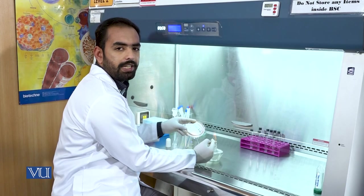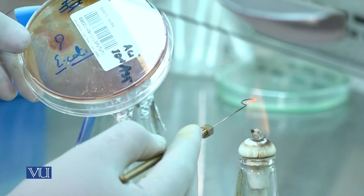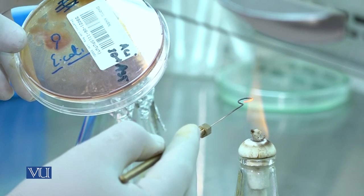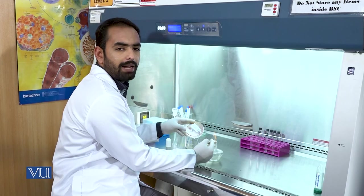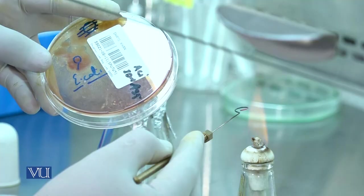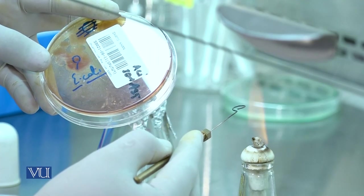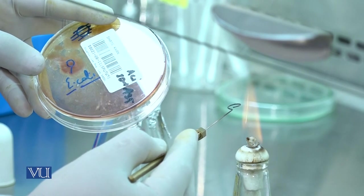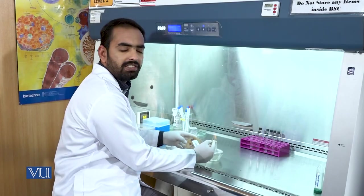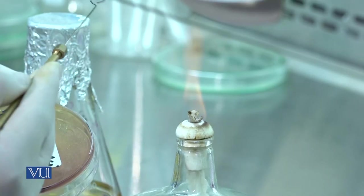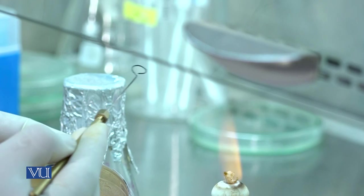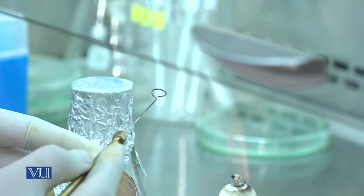This is a culture of E. coli. We will pick the colonies of the bacteria E. coli with the help of inoculating loop and we will mix it in a liquid broth media. After sterilizing the loop, cool it for a bit and pick the colonies of the bacteria.